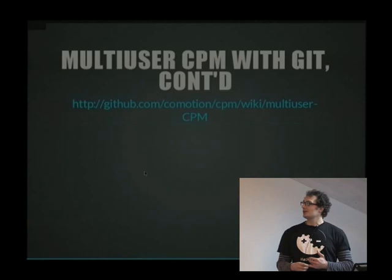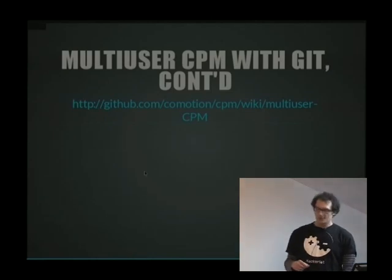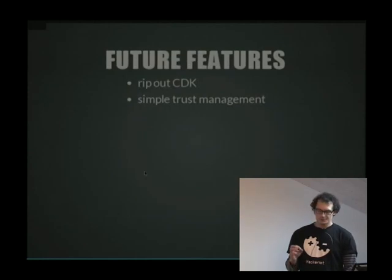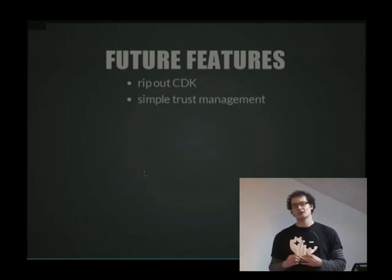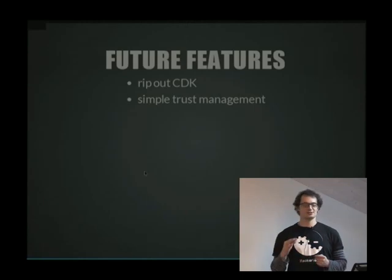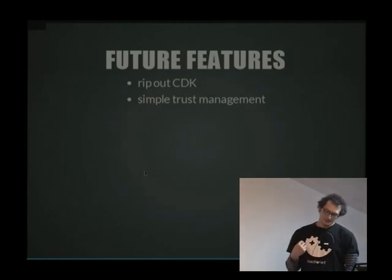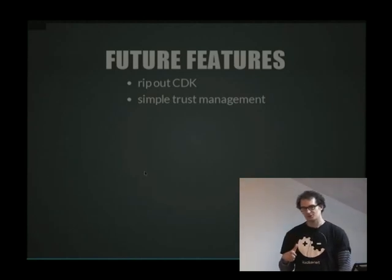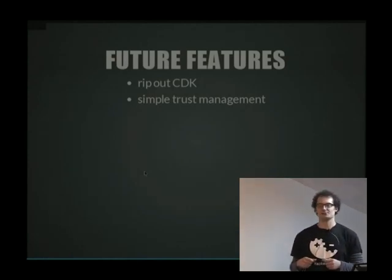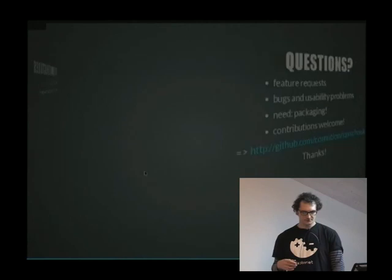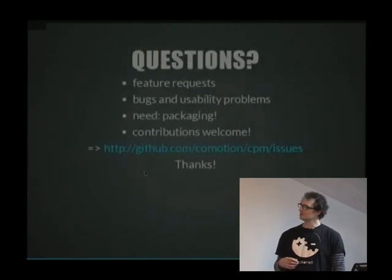Multi-user CPM is documented in the GitHub wiki. Future features: we'd like to rip out the Console Development Kit and use our own, because that's where all the internationalization issues come from — we can't currently use UTF-8. We'd also like to add simple trust management to CPM, and if someone contributes, get CPM into the extended enterprise repository so it's available for Red Hat, CentOS, and other platforms. I'd love to hear questions.